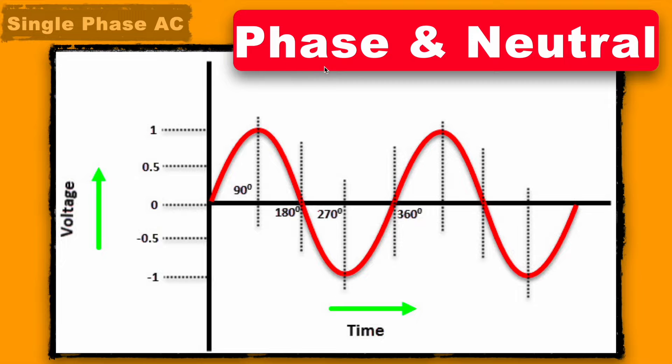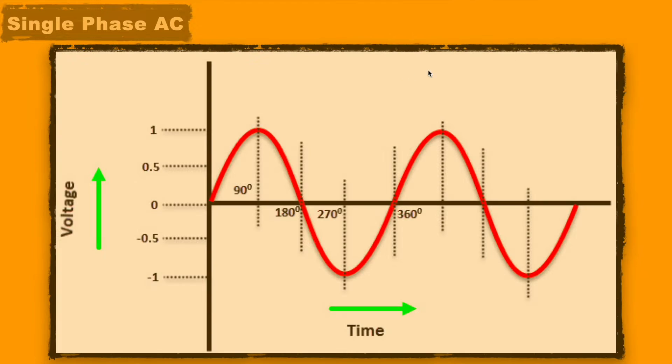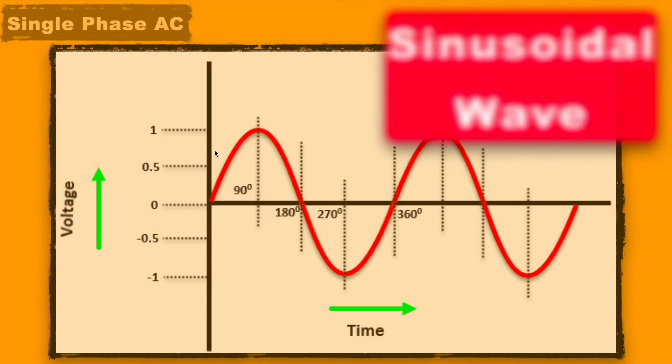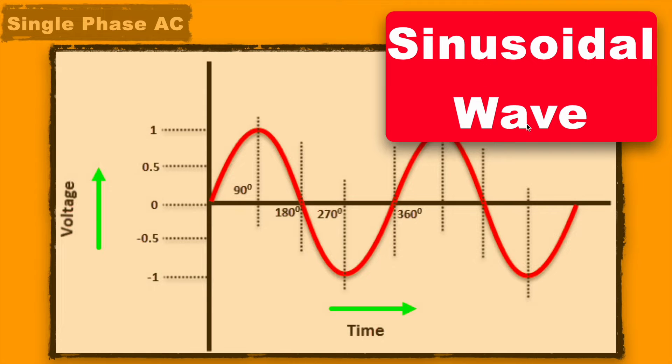It consists of two wires, one is phase and another is neutral. This phase only carries the power to the load and this neutral wire is just for the circuit completion. As you can see here, this phase makes the waveform similar to sinusoidal wave and its voltage fluctuates a lot.